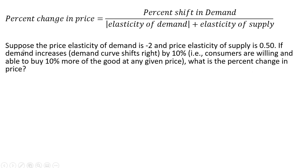Here's an example. Suppose the price elasticity of demand is minus 2, and the price elasticity of supply is 0.5. If demand increases — that is, the demand curve shifts right by 10%, where all consumers are willing and able to buy 10% more of the good at any given price — what is the percent change in the price?